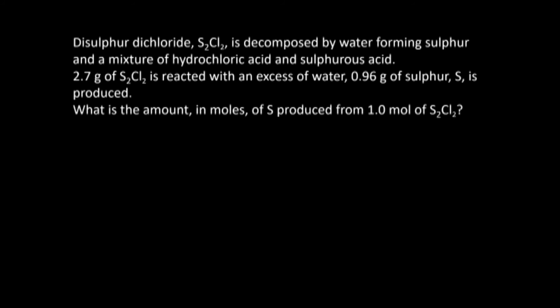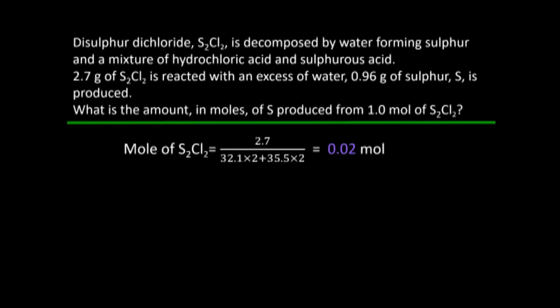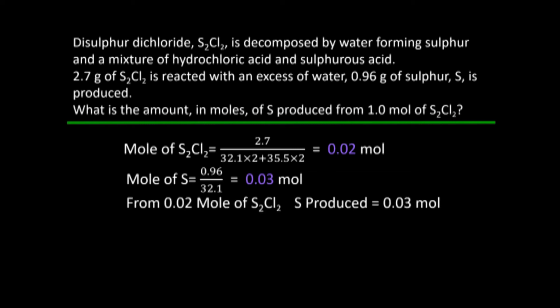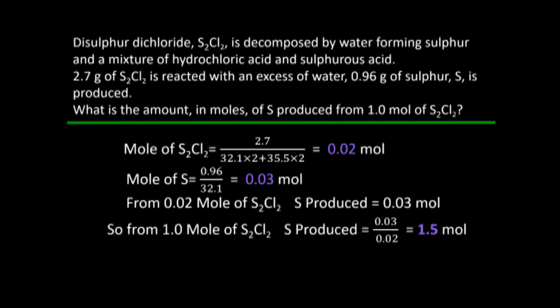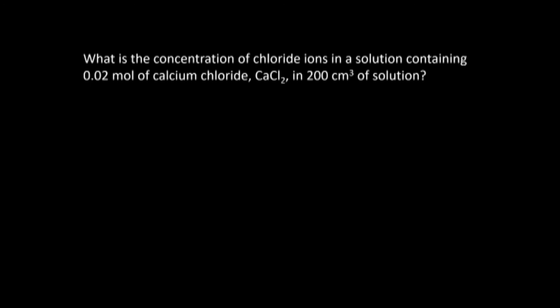Reacting masses and volumes problem: S₂Cl₂ is decomposed by water to give sulfur, hydrochloric acid, and sulfurous acid. Given that 2.7 g of S₂Cl₂ produces 0.96 g of sulfur, find the moles of sulfur produced per mole of S₂Cl₂. Moles of S₂Cl₂ = 0.02; moles of sulfur = 0.03. Therefore from 0.02 mol S₂Cl₂ we get 0.03 mol sulfur, so from 1 mole of S₂Cl₂ we get 1.5 mol sulfur.